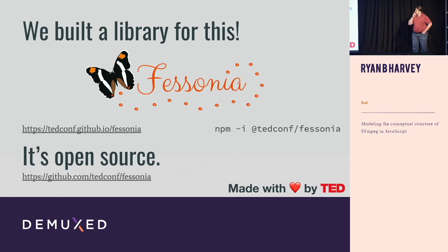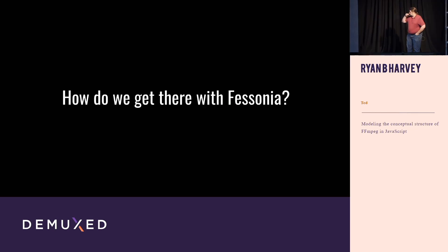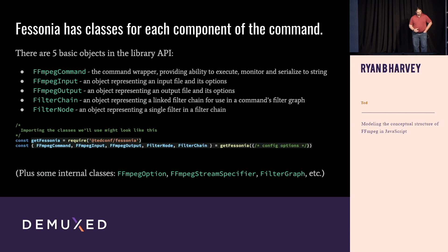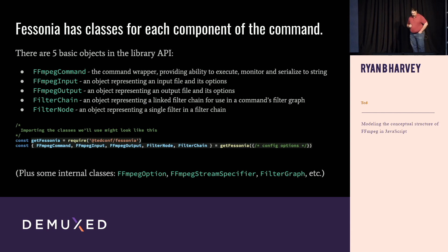We built a library that does this. The library is called Fisonia. It's open source, it's version one, and we're using it now in our encoding automation. In Fisonia, we've got five basic objects in the API. There's a command — the command wrapper where everything gets added. There's an input object representing the input file with its options. There's an output representing the output file with its options. There's a filter chain — the basic object that gets added to a filter graph; each command has its own filter graph, so you just add chains to it and map the inputs and outputs. And there are filter nodes — the individual filters that go into the filter chain.